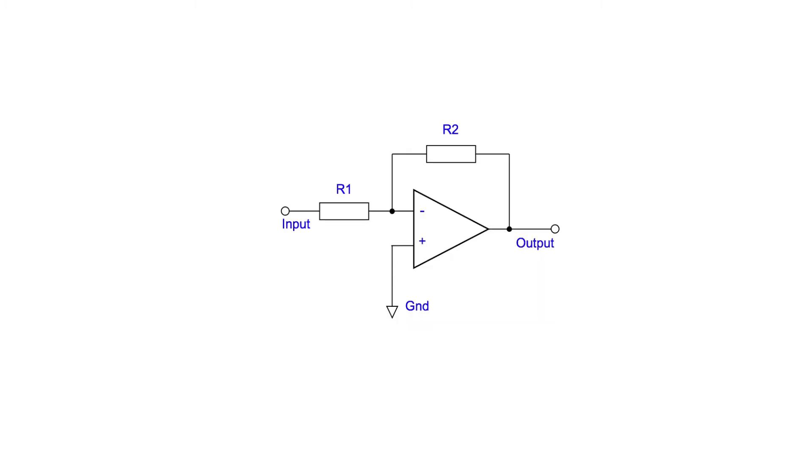The inverting amplifier is able to overcome this problem very neatly. Let's look at the basic inverting amplifier circuit again. From this, it's obvious that the non-inverting input is at ground potential, simply because it's connected to ground.